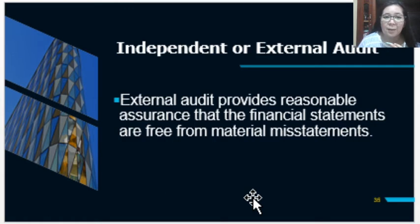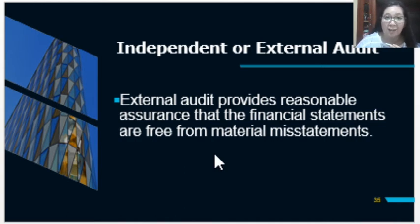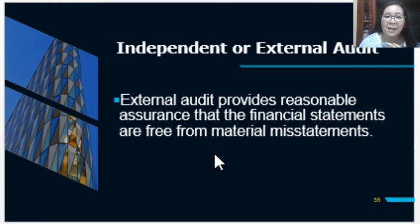External audit provides reasonable assurance that the financial statements are free from material mistake. Reasonable assurance is the assurance provided by the auditor, which is high but not absolute. The auditor cannot give 100% assurance about the fairness of financial statements because audit is subject to limitations and risks, which can only be reduced to an acceptably low level but cannot be eliminated totally. That is why the assurance given by the auditor is only reasonable.